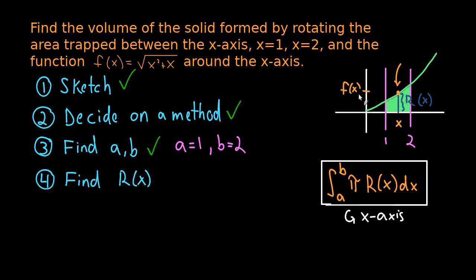If you notice, this point right here is on the function, and f(x) tells us the height of points on the function. Given an x value, f(x) tells you the height. So this is f(x), and that height is the distance from the x-axis to the point on the function. In other words, f(x) is this radius function we're looking for. So r(x) equals f(x), which is the square root of x squared plus x.